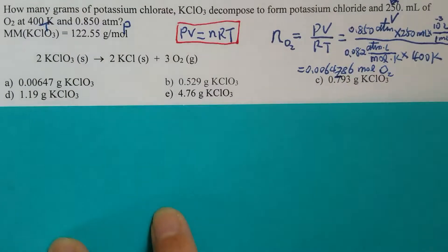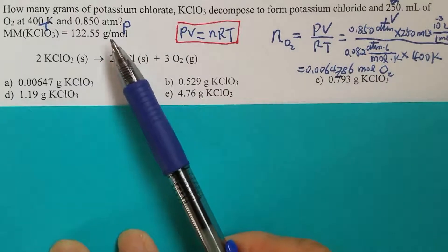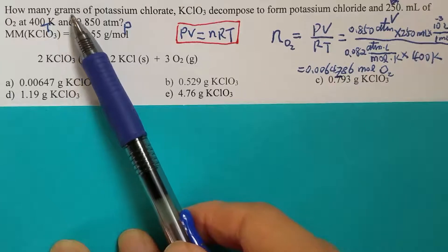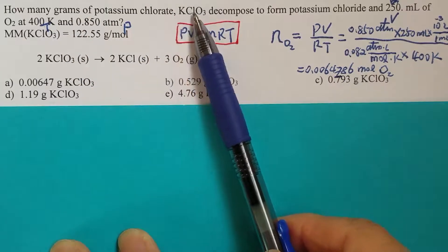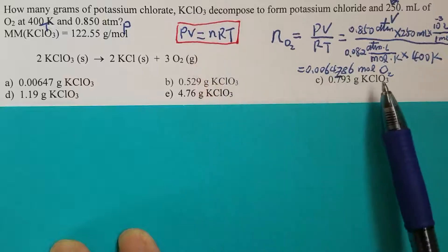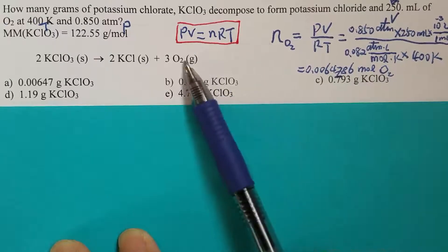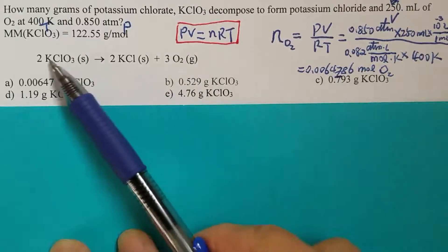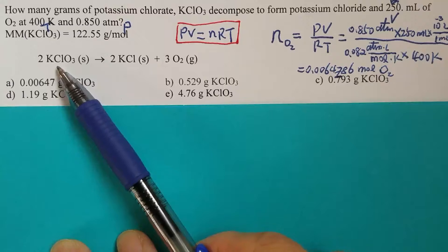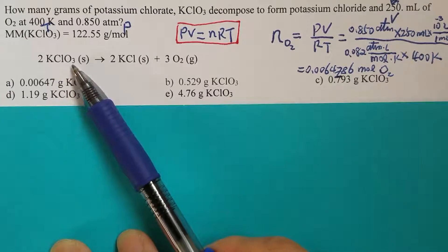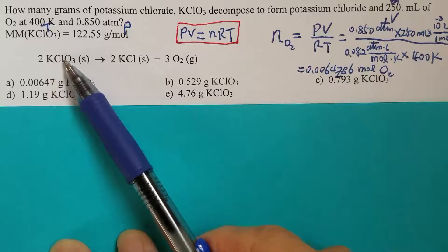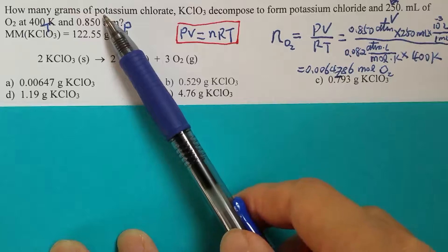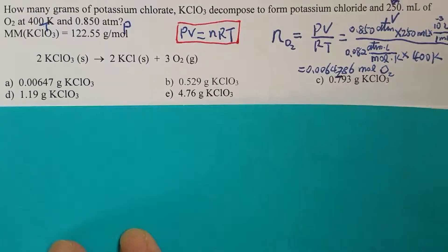Now we are ready to carry out the stoichiometry calculation to find the number of grams of potassium chlorate. We already know the number of moles of oxygen, then we will convert that to the number of moles of potassium chlorate, and then further from moles of potassium chlorate to grams of potassium chlorate. That's the plan.